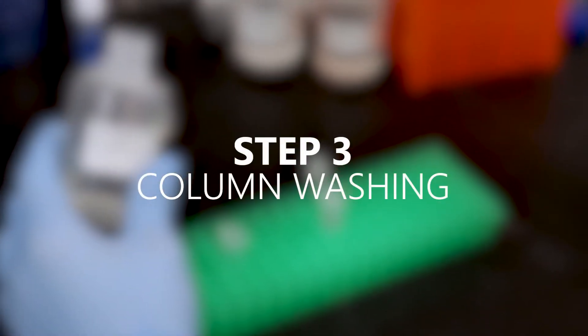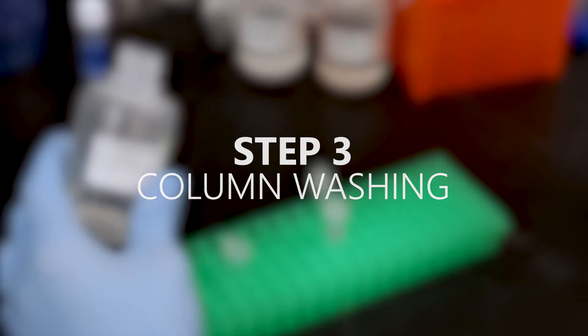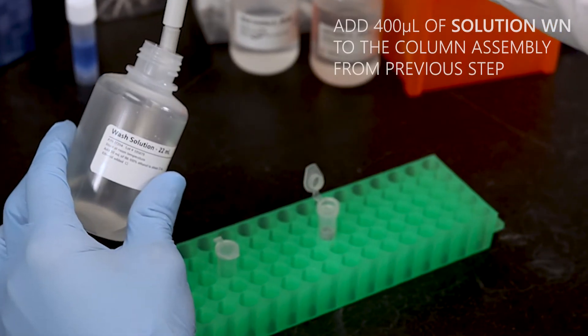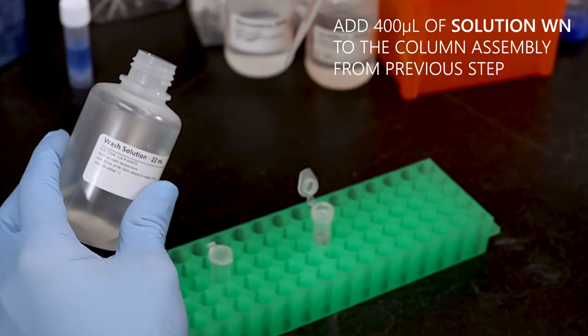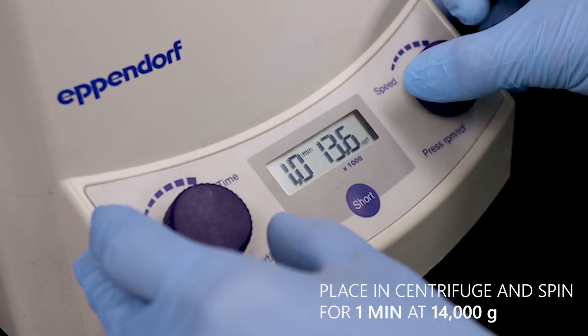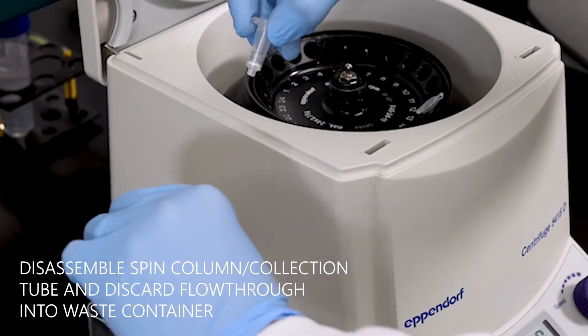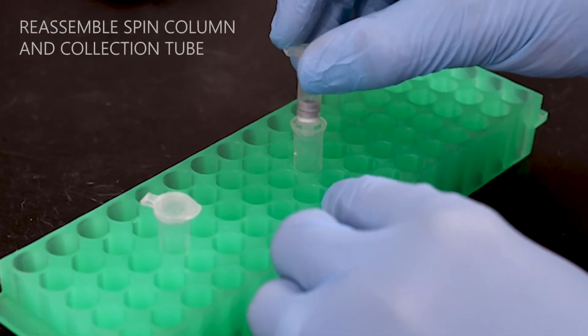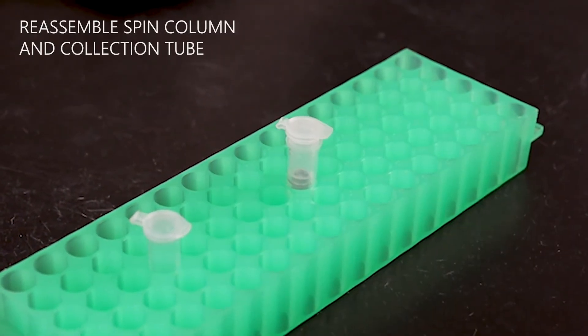Step 3. Column Washing. Add 400 microliters of Solution WN to the column assembly. Then centrifuge for 1 minute at 14,000 G. Discard the flow through into a waste container. Reassemble the spin column and collection tube.